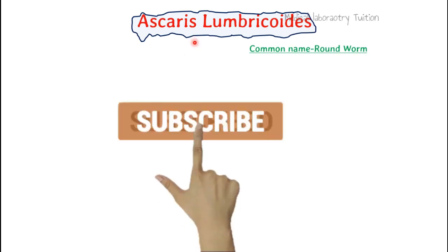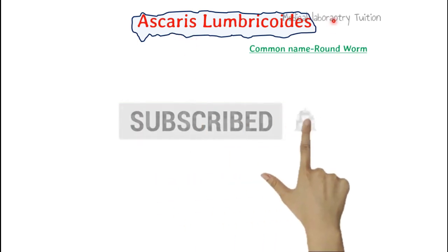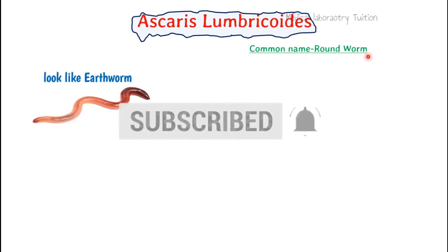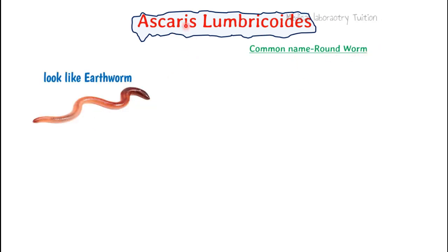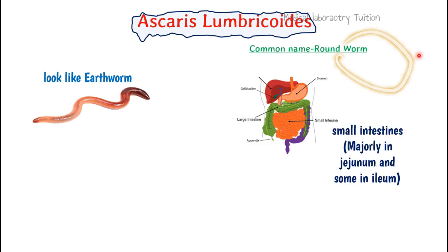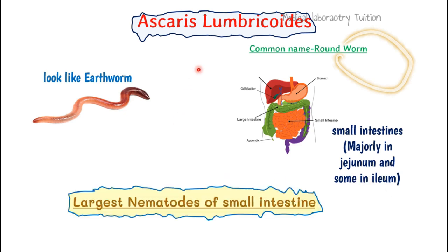Welcome guys. This is a video about Ascaris lumbricoides, whose common name is roundworm. It almost looks like an earthworm but the color is whitish cream — that color is very important. Ascaris lumbricoides lives inside the small intestine, majorly in the jejunum and ileum, which is the medium and last part of our small intestine. It is our largest nematode. Those who haven't watched the introduction to parasitology video, please watch that first to understand the terminology.